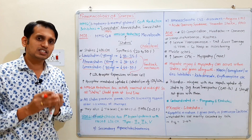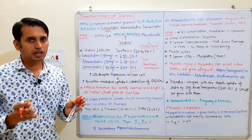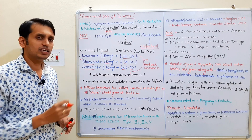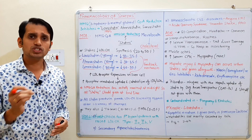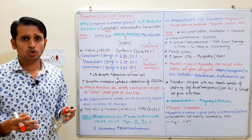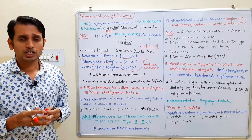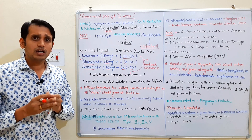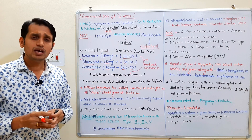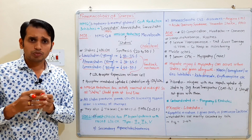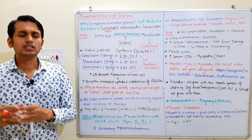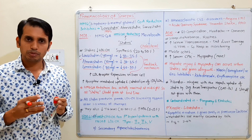Cholesterol is an essential compound in your body within a normal range of approximately 150 mg per deciliter, because cholesterol is the main precursor for hormones such as estrogen, androgens, and corticosteroids. However, high cholesterol or high lipid levels in the body can cause atherosclerosis, leading to various cardiovascular disorders like myocardial infarction and angina pectoris.